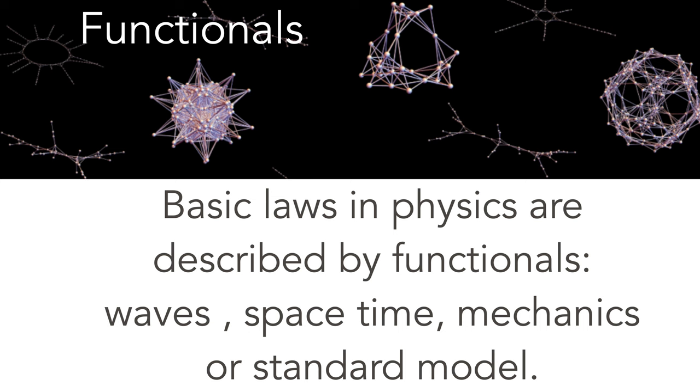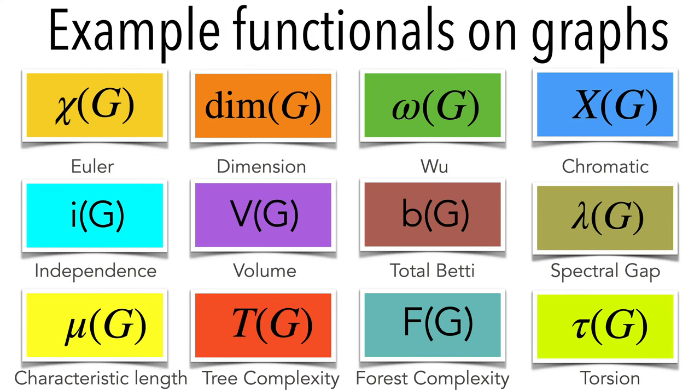One of the most important principles in physics is that the laws are obtained from functionals. All classical theories are like that, and it's natural also on graphs, on discrete objects, to look at functionals. These are functions I've looked at, especially Euler characteristic dimension. You can look at the inductive dimension, Wu characteristic which generalizes chromatic number, independence number, spectra, characteristic lengths, the sum over all possible lengths, trees, the number of trees, spanning trees, the number of spanning forests, torsion, something I looked at recently.